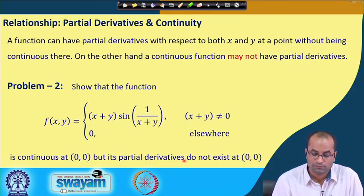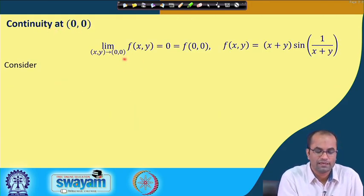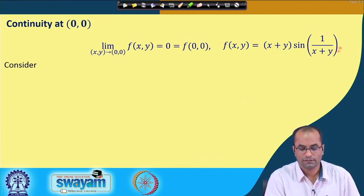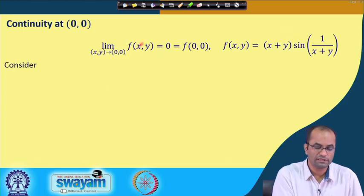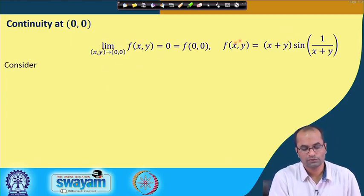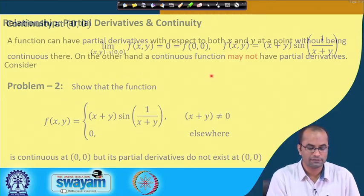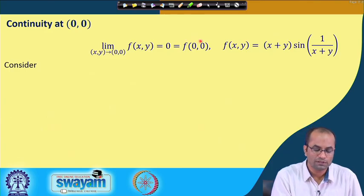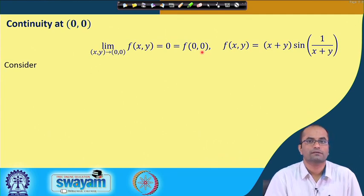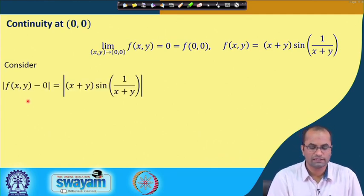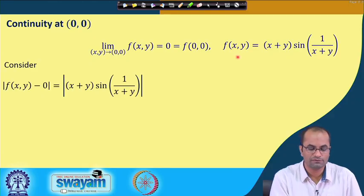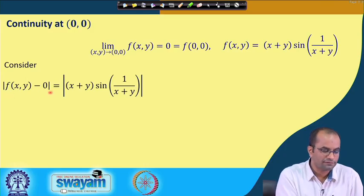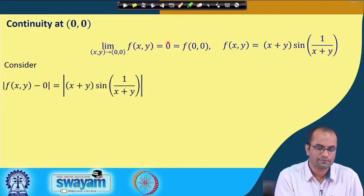Consider the function f(x, y) = (x + y)sin(1/(x + y)) when x + y ≠ 0, and f(0, 0) = 0. We want to show this is continuous at (0, 0) but its partial derivatives do not exist. For continuity, we check that the limit as (x, y) → (0, 0) of f equals 0, which equals the function value at (0, 0).